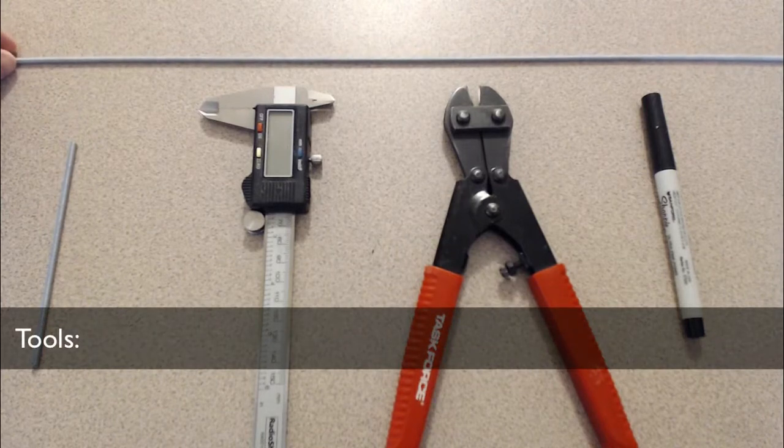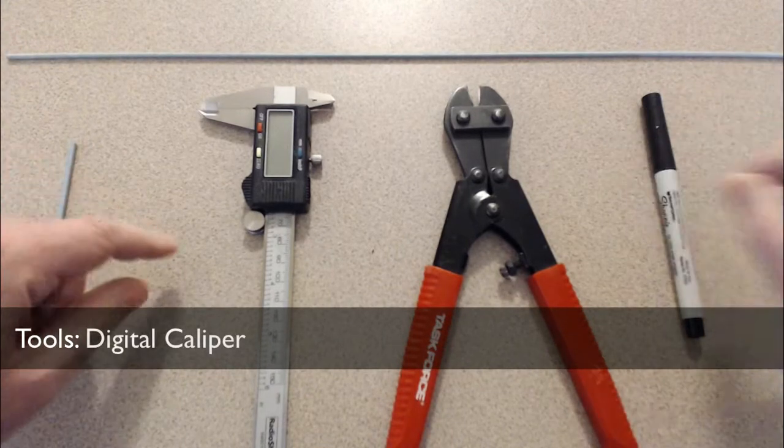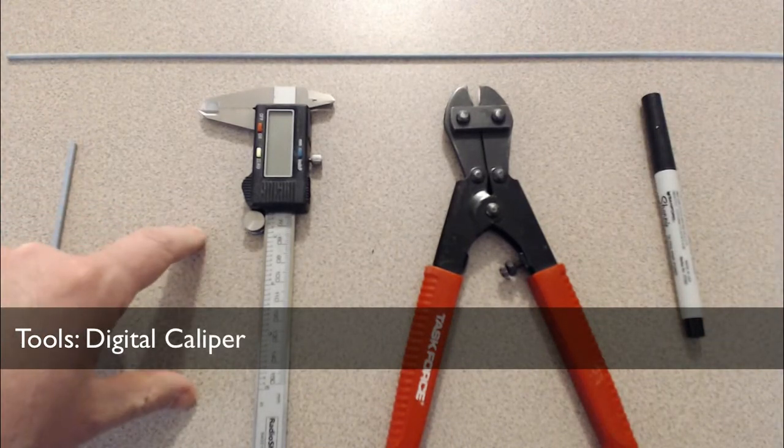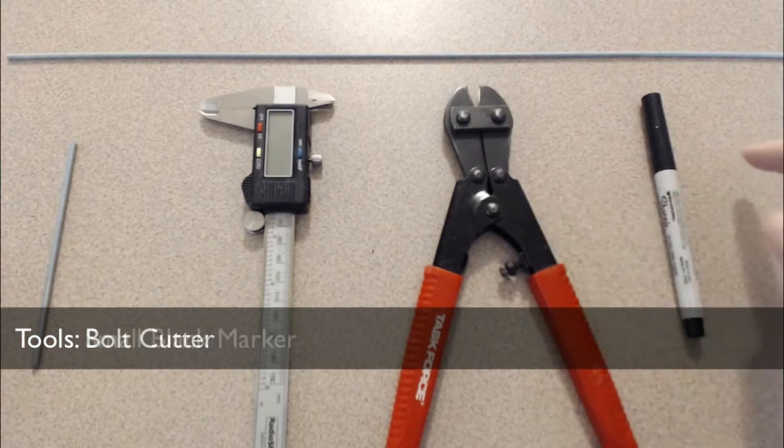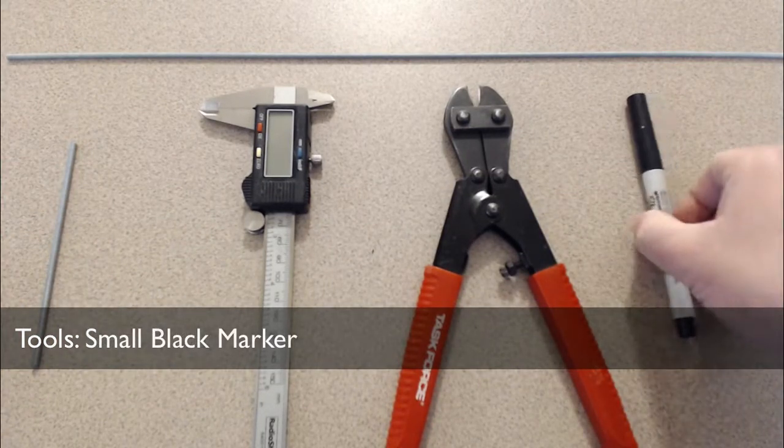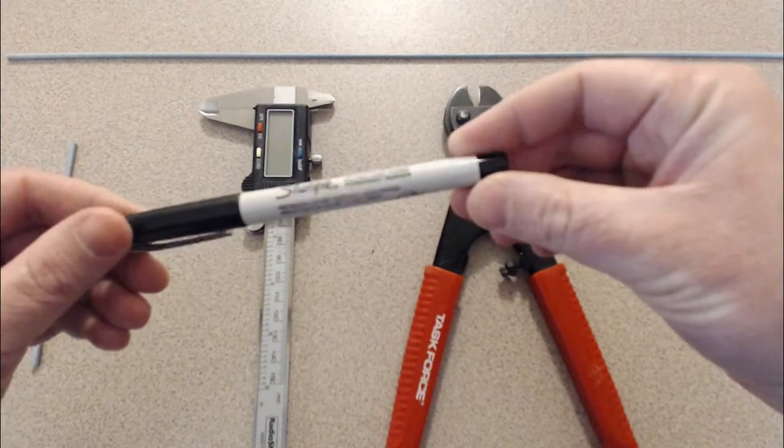And these are the tools that we're going to use. First, these digital calipers, a bolt cutter, and a small black marker. This one's an ultra fine tip Sharpie.